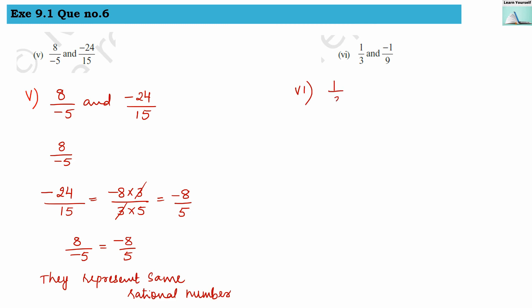Sixth: 1 by 3 and minus 1 by 9. The fraction 1 by 3 is in its simplest form, and minus 1 by 9 is also in its simplest form. These two are not the same, so they do not represent the same rational number.